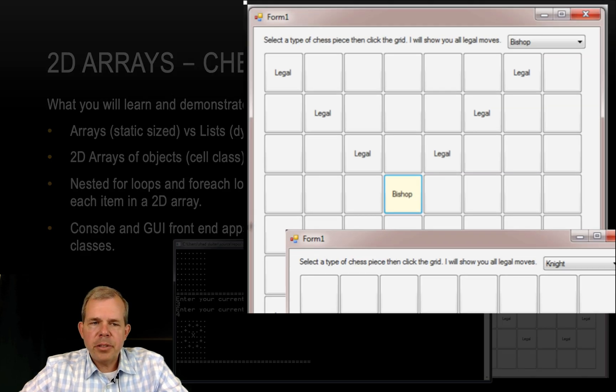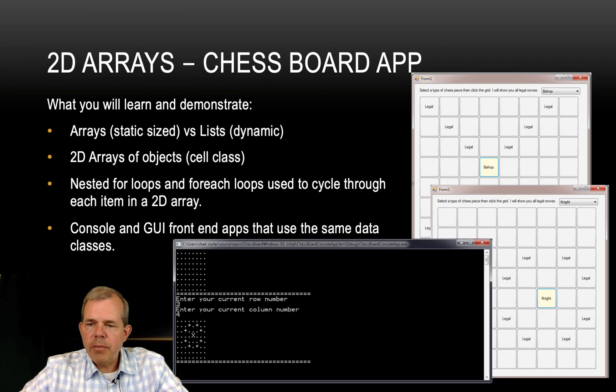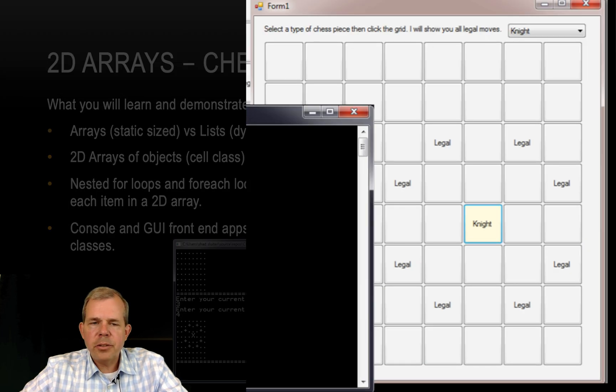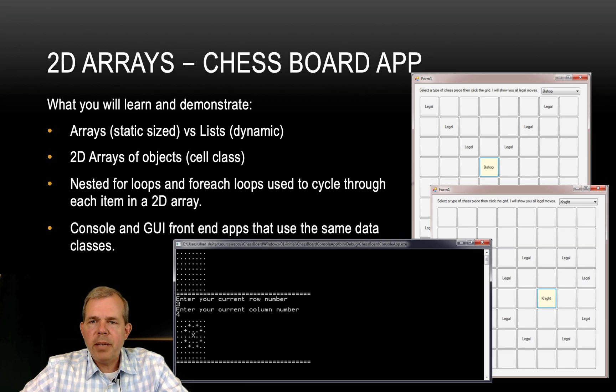You can see on the example on the screen, we have a bishop in one of the squares and we have a knight in another square. So if you don't know chessboard moves, then this would be a great time to go stop the videos and go look up a tutorial on how to play chess.